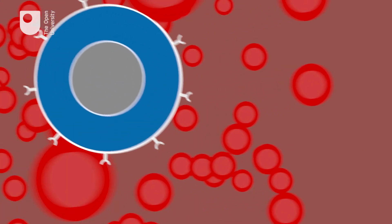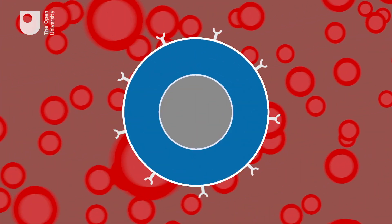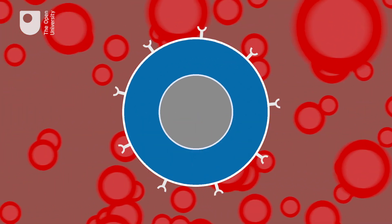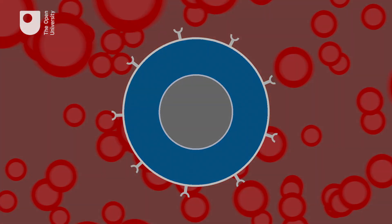In contrast, some of the clone cells become memory cells with a lifespan of decades. They circulate in the bloodstream, ready to produce antibodies much more quickly when they next encounter the same pathogen. It's the memory cells that produce the secondary immune response.